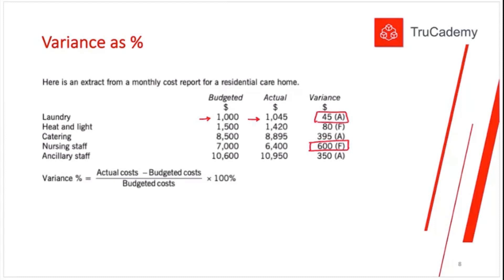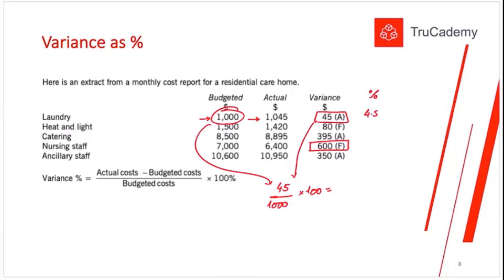But instead of numbers, if we report these variances based on percentage, this will be an even better way of presenting your information. How we calculate a percentage: take the variance and compare it with the budgeted cost. So 45 divided by 1,000 equals 4.5 percent. What we can say is that our actual performance is 4.5 percent worse than the budget. The 45 dollars is not that meaningful, but 4.5 percent is much more meaningful.